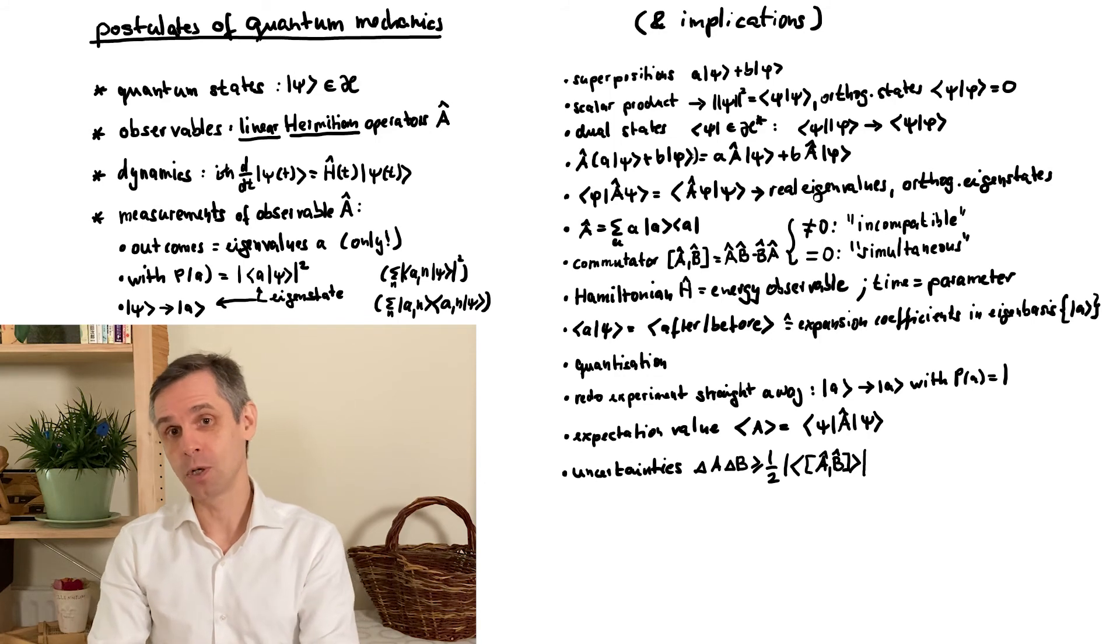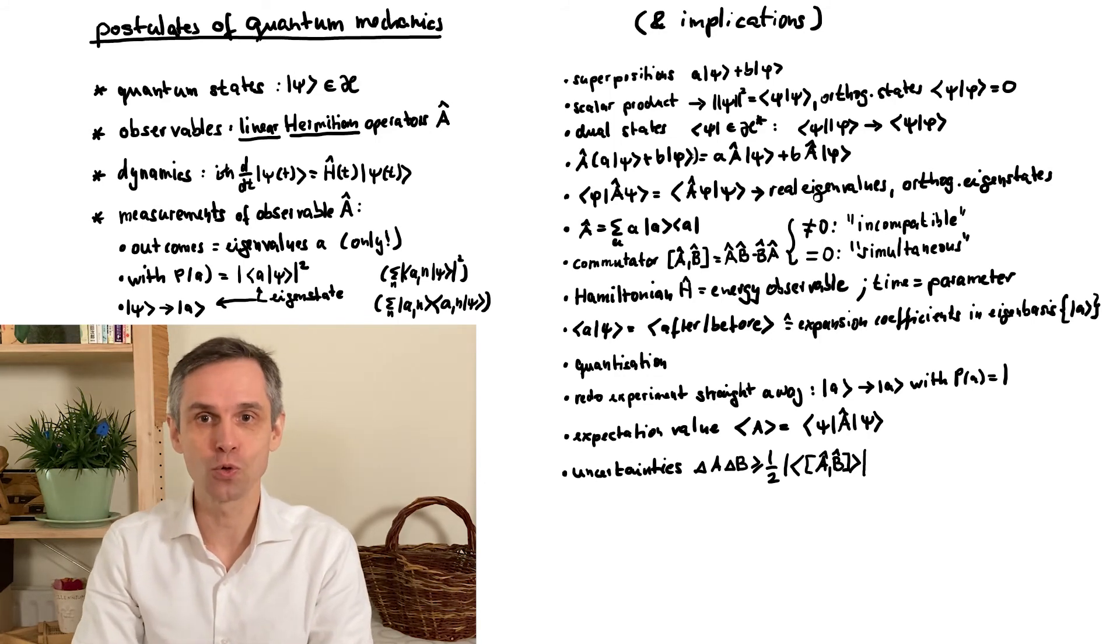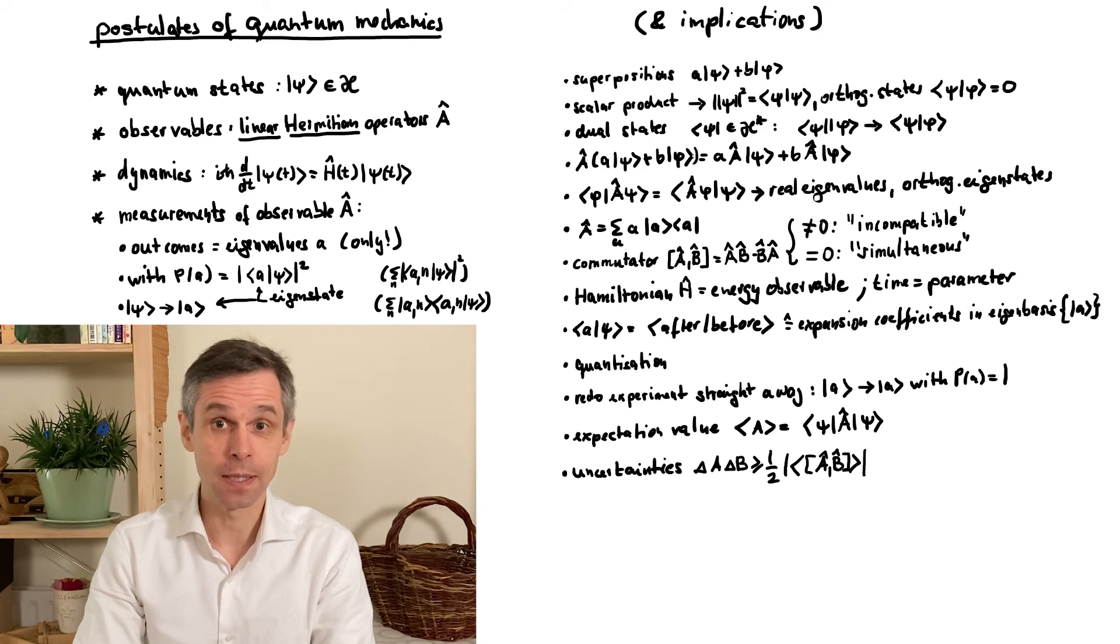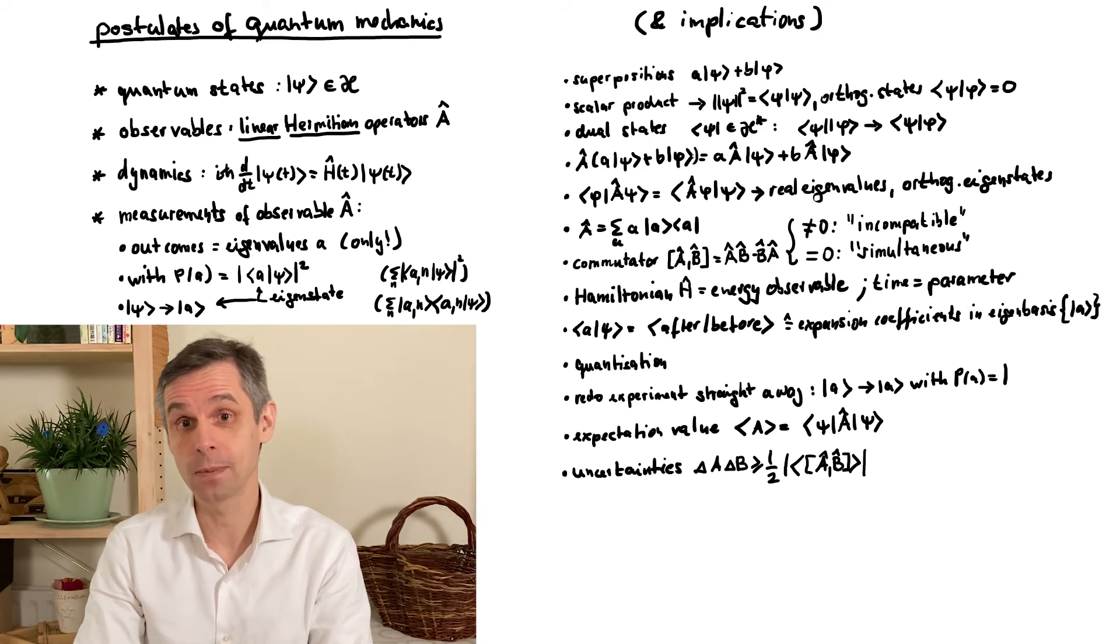Indeed, there are many situations where you combine simultaneous observables to remove any ambiguity about the states which may arise from degenerate eigenvalues. As a matter of fact, a set of simultaneous observables is often used as the starting point to define the possible states of a quantum system. And we will apply this logic soon when we will turn to three-dimensional systems.